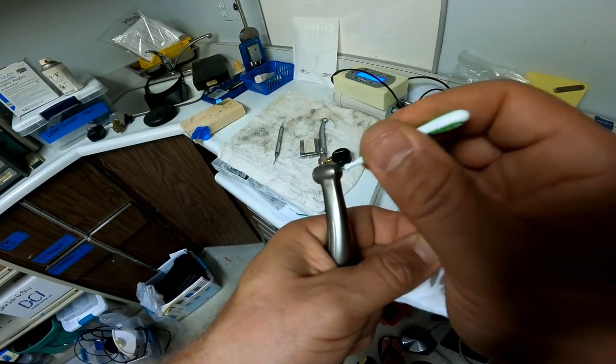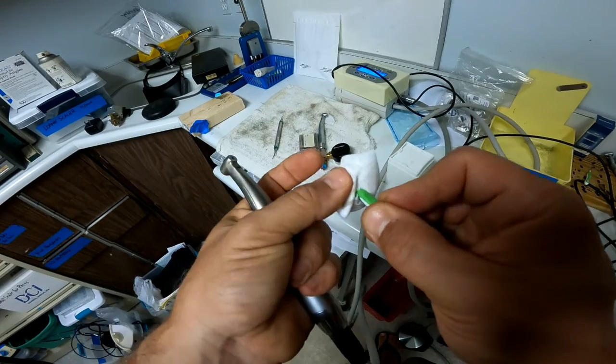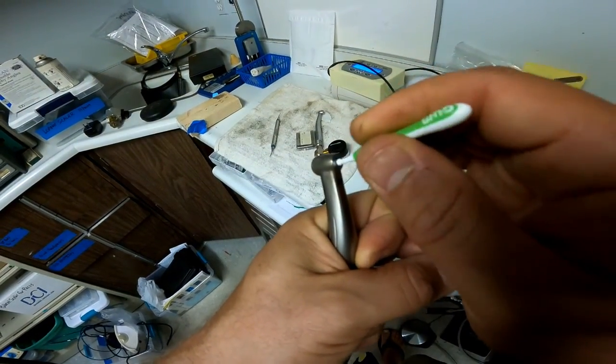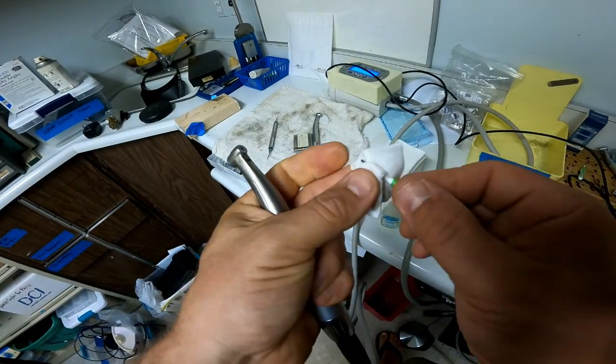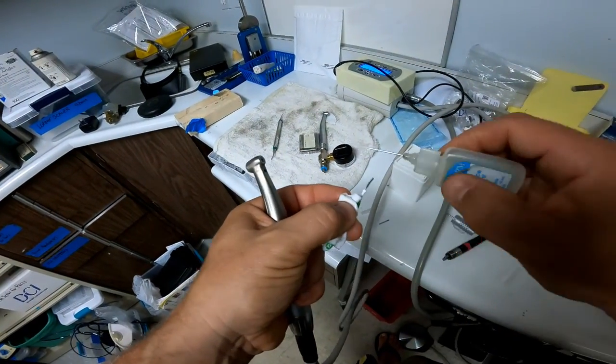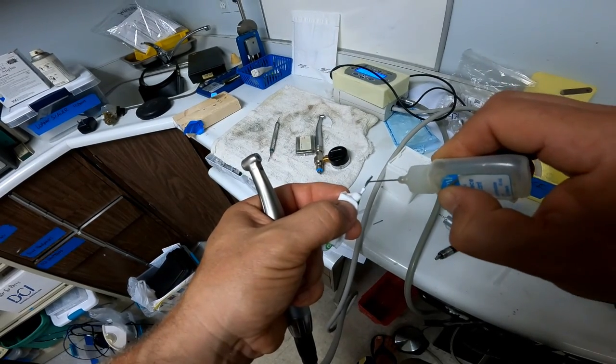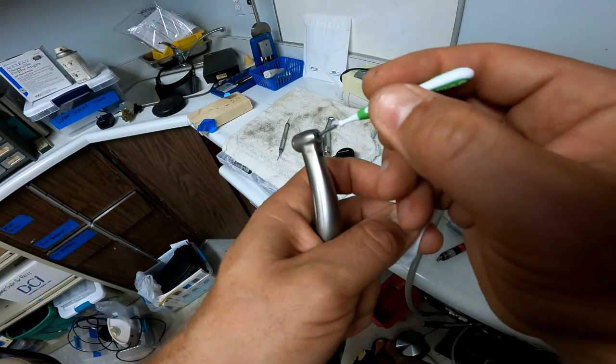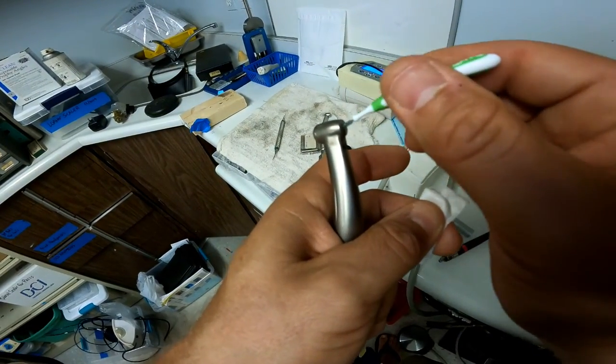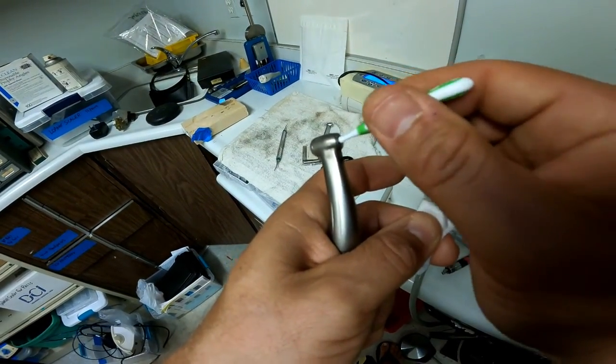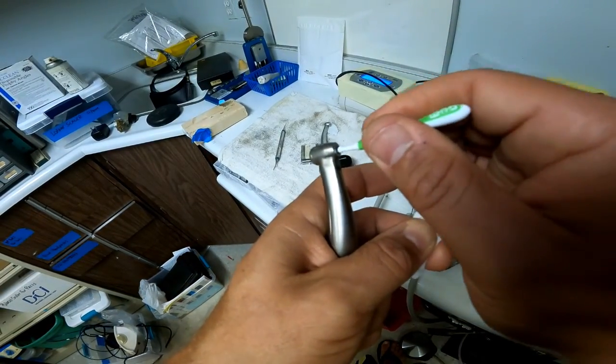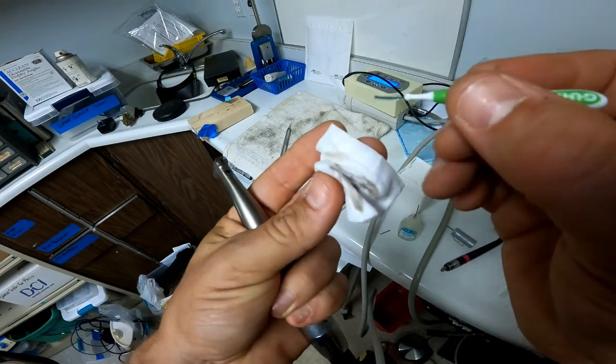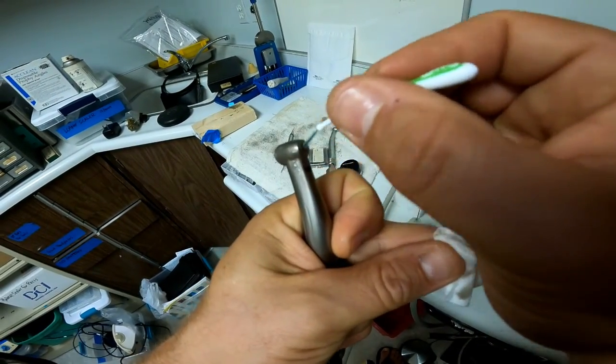And obviously, I don't have a crystal ball. So I'm hoping as I do this, that it actually works. Sometimes this doesn't work. But I mean, what can you really lose by doing this? All right, all we're going to do is keep cleaning it until we don't really see any more black gunk on there.